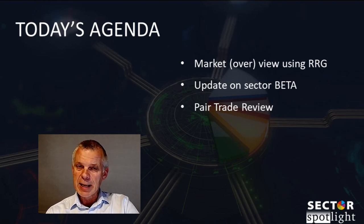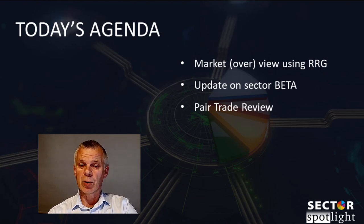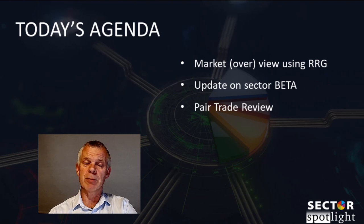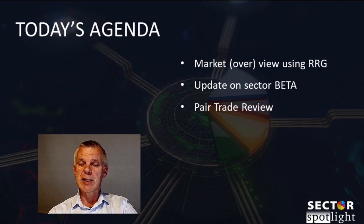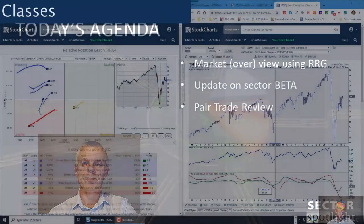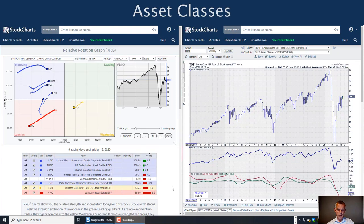Then I will do an update on the use of beta for offense versus defense for risk assessment. I've updated that spreadsheet with the latest data, and also done the same exercise for the equal weight sectors — there are some pretty interesting differences there I want to share. In the last segment of the show we'll go over the outstanding pair trades, look at those, and present how I want to go forward with that segment of pair trade ideas. Ladies and gentlemen, let's get started with Sector Spotlight.